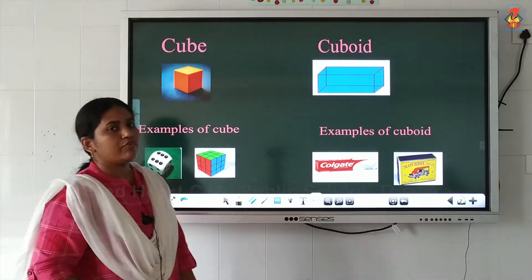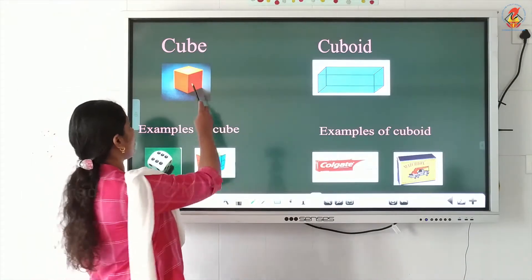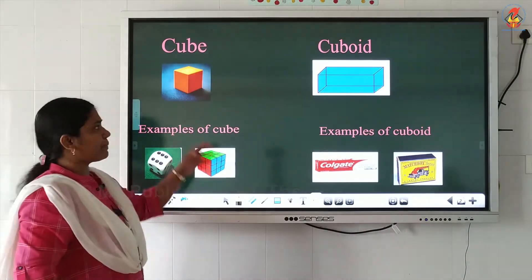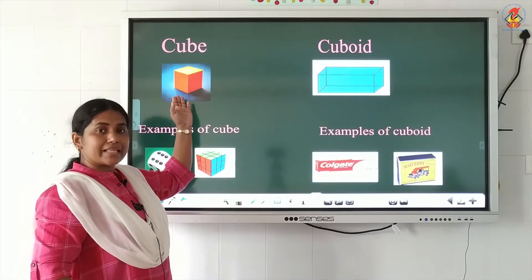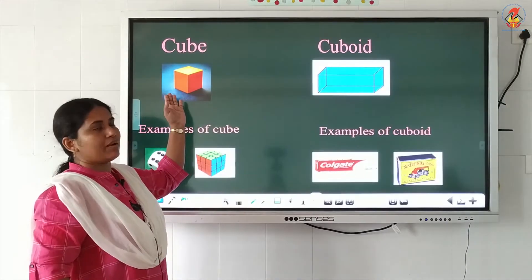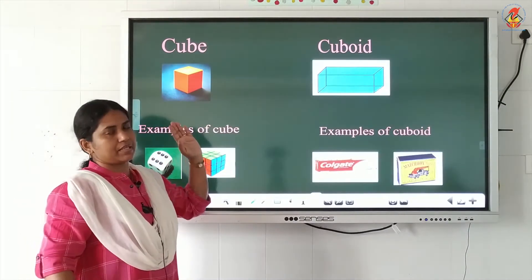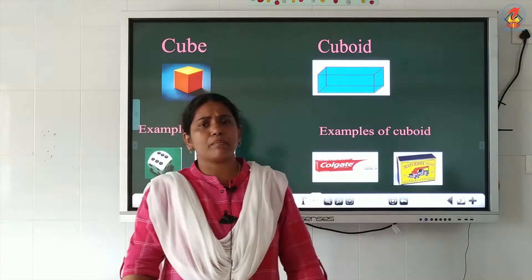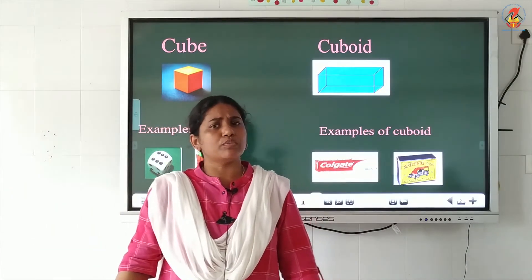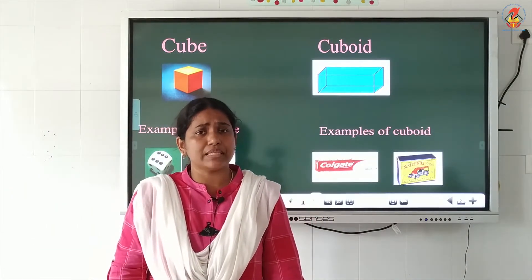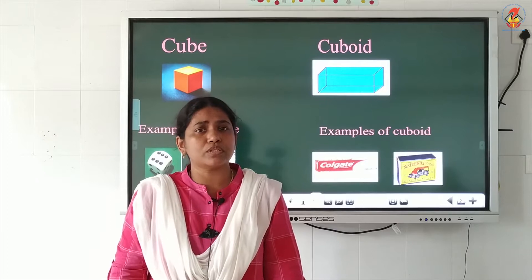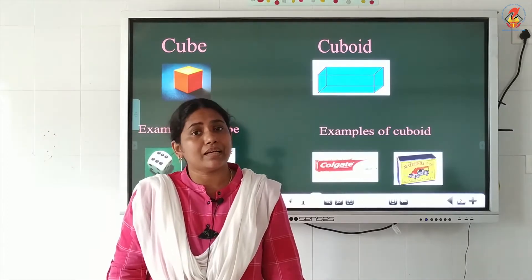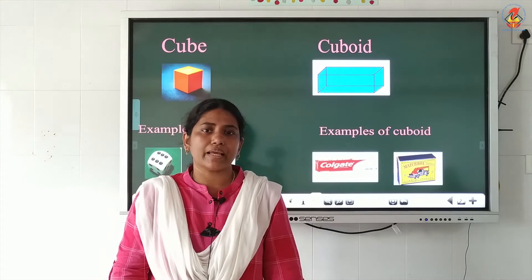Now look at the board. The first solid or 3D shape is the cube. You can see the picture over here — it's a 3D or solid shape called cube. Children, do you know the examples for cubes? In our surroundings, in our home, we are using many solid shapes like a cube. Which ones are they?